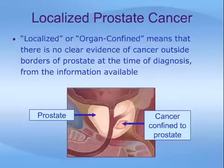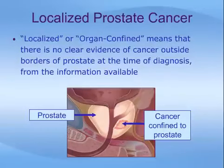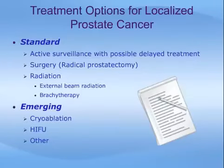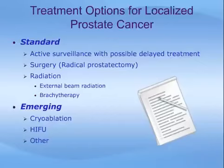Localized or organ-confined prostate cancer means that there is no clear evidence of cancer spread outside the borders of the prostate at the time of diagnosis, based on information from the PSA, the digital exam, and the biopsy report. There are many treatment options available for localized prostate cancer. Accepted standard options include active surveillance with possible delayed treatment, surgery called a radical prostatectomy, and two types of radiation: external beam radiation and brachytherapy. The rest of this module discusses brachytherapy in more detail.